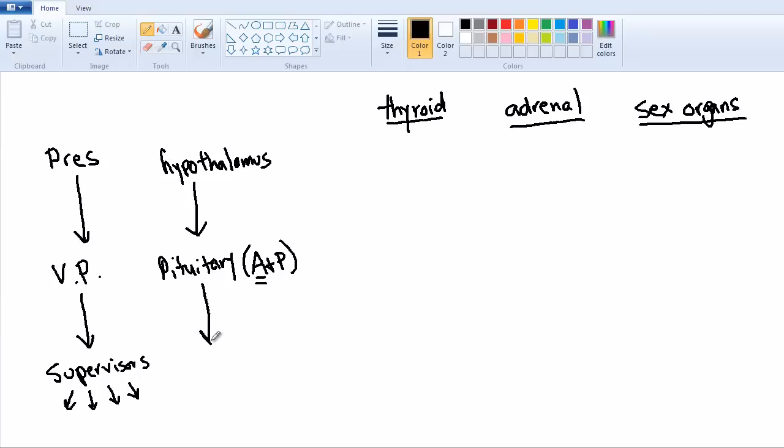And then after that we call the next set of organs target organs. I'm just going to abbreviate that right here as TO. The thyroid is a target organ. The adrenal gland is a target organ. And the testes and ovaries are target organs.